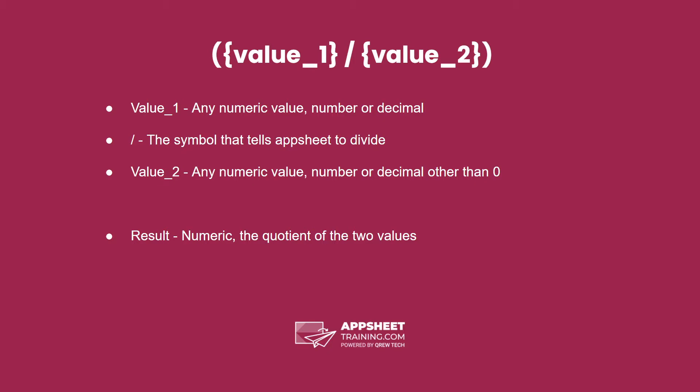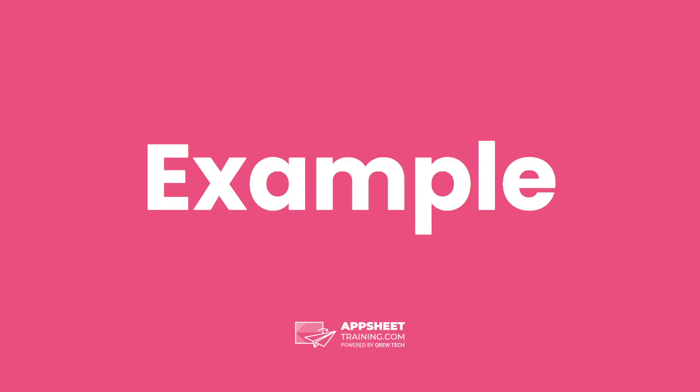The result overall is a numeric, the quotient of the two values. Let's check out some examples.